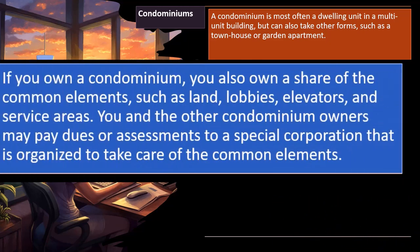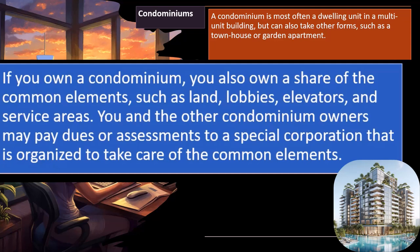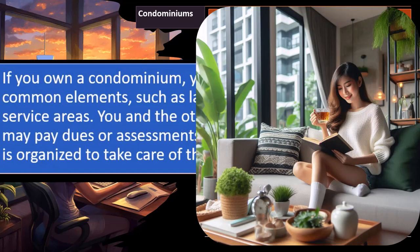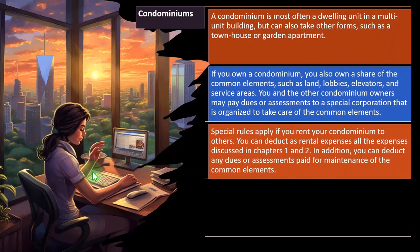If you own a condominium, you also own a share of the common elements, such as land, lobbies, elevators, and service areas. In the baseline case where you just have another house you're renting, it's all rental property. But in the condominium situation, you also have those common areas like lobbies and elevators, which are part of the property but not assigned to any particular unit. You and other condominium owners may pay dues or assessments to a special corporation organized to take care of the common elements, which is a common situation.